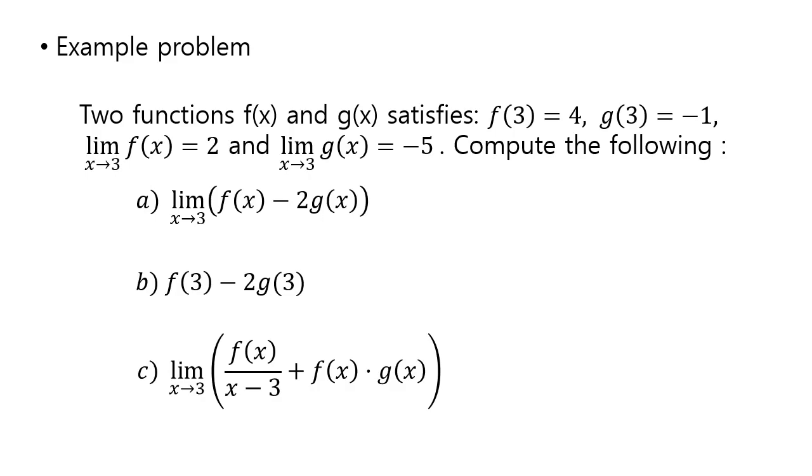So I'll just do an example problem. And if you can't do this, then you can just ignore what was said before. So here's an example problem. You have two functions. f of 3 is 4, g of 3 is negative 1, whereas limit of f of x as x goes to 3 is 2, and limit of g of x as x goes to 3 is negative 5. And you're asked to compute the following.